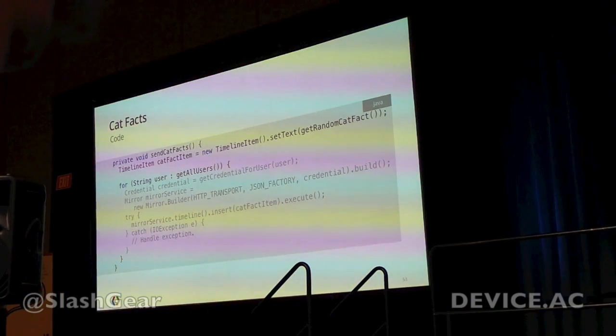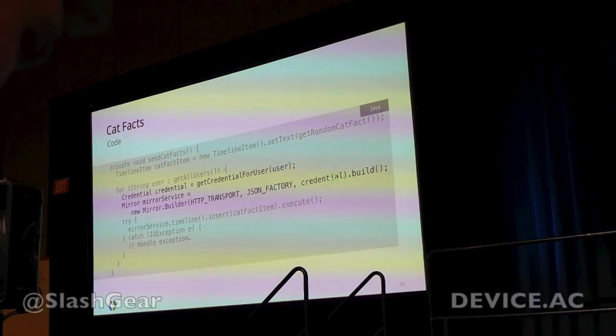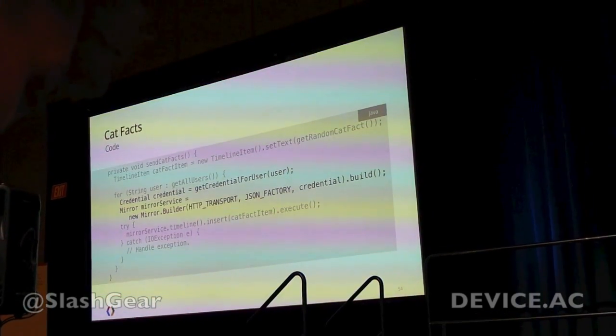Get your credentials, build a Mirror service — this is Java, it might change according to what language you're using. Then push the item to a user's timeline. Of course, always check for exceptions. Something bad might happen, and you want to catch that so you don't break the process for all the rest of the users. And that's it — you just send all the catfacts to all users.